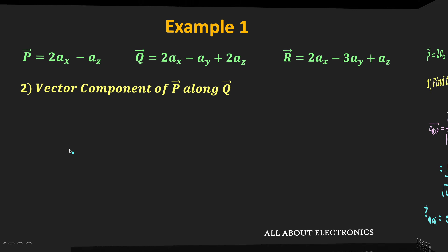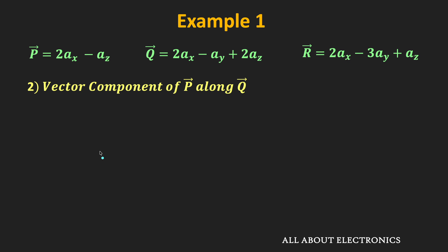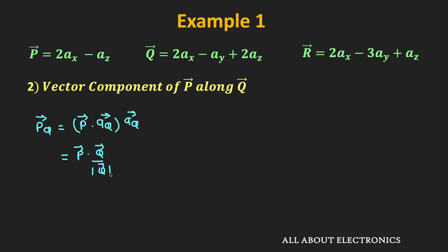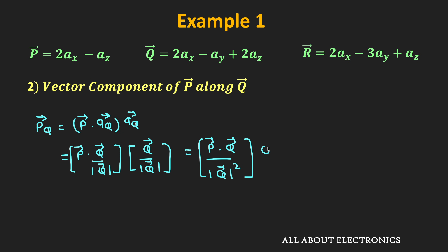Now let us look at the second part. We have been asked to find the vector component of P along the Q vector. The vector component of P along Q can be given as (P · aQ) × aQ, where aQ is the unit vector along Q, given as Q divided by the magnitude of Q. This simplifies to (P·Q / |Q|²) × Q.